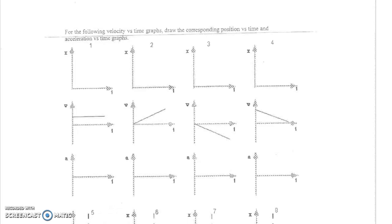Looking at this left graph, we have a constant positive velocity, so our change in position is the same amount for each unit of time, and since velocity is positive, our change in position is more and more positive. Assuming we start at zero, our position versus time graph is a straight line going up. Since velocity is constant, there's no change in velocity, so acceleration is zero.